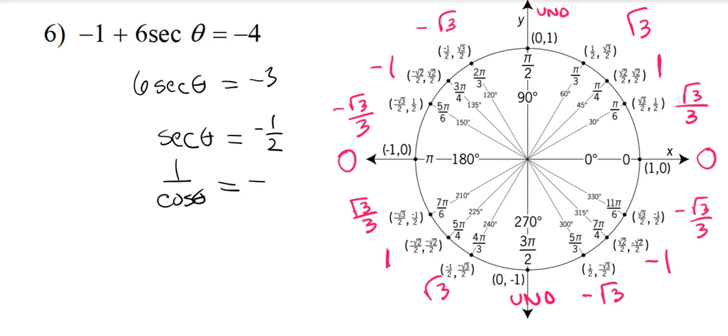Now, some of you may be able to skip this step that I just wrote down and take the reciprocal of both sides kind of at once. So, when you do that, the reciprocal of when we flip one over cosine, that just becomes cosine. And when we flip negative one-half, that becomes negative two.